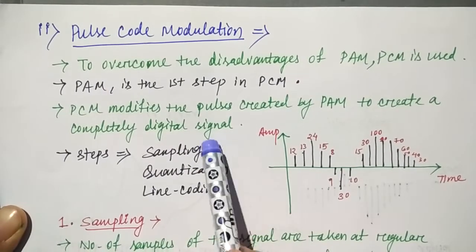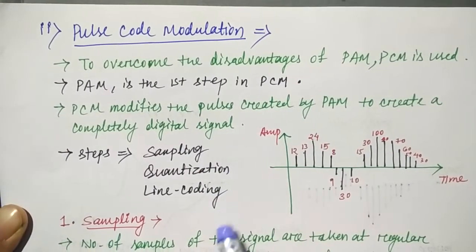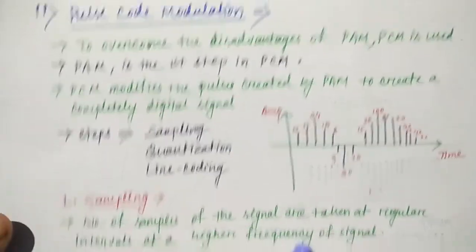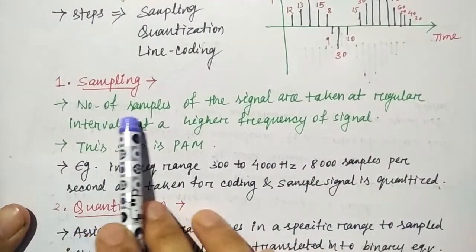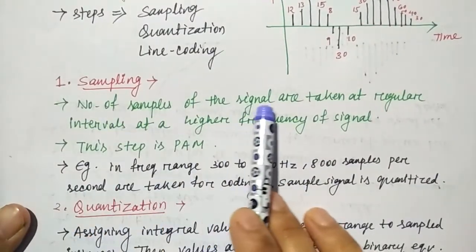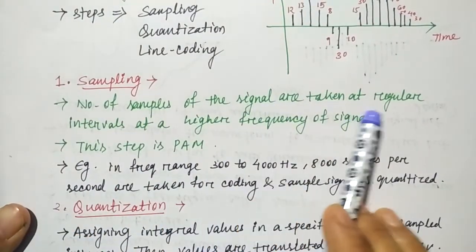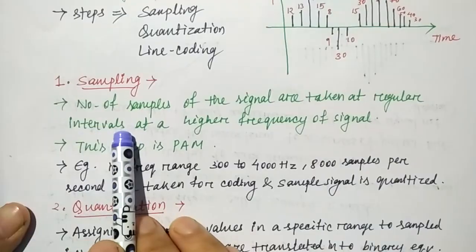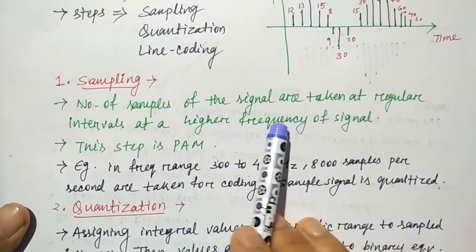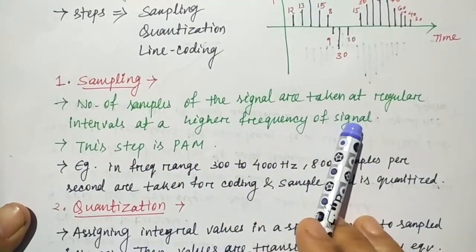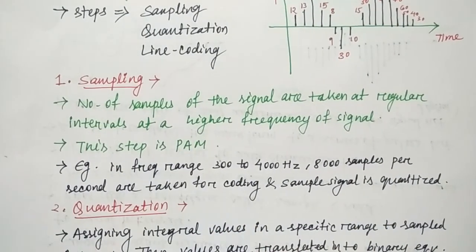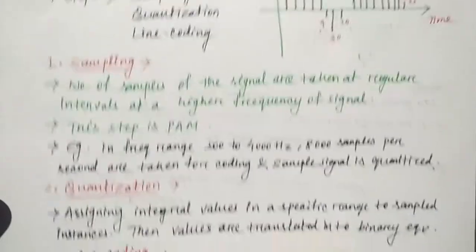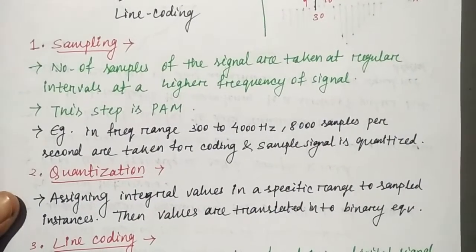There are three steps: Sampling, Quantization, and Line Coding. In sampling, a number of samples of the signal are taken at regular intervals at a higher frequency of the signal. This step is exactly the same as Pulse Amplitude Modulation.